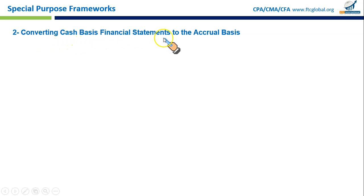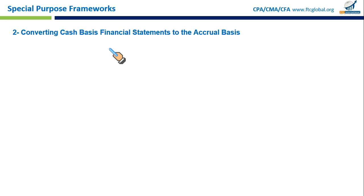Next: converting cash basis financial statements to the accrual basis. Many small businesses use cash basis accounting for everyday operations because it's simple and straightforward. However, in some situations — like applying for a bank loan, reporting to investors for funding, or preparing for an IPO — you may have to switch from cash to accrual basis accounting.